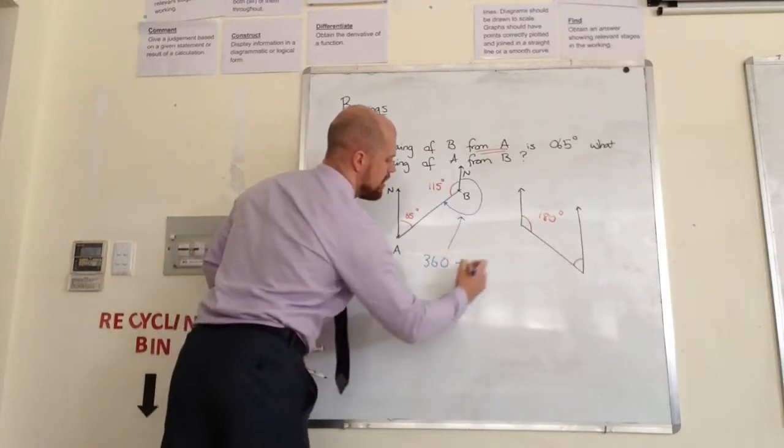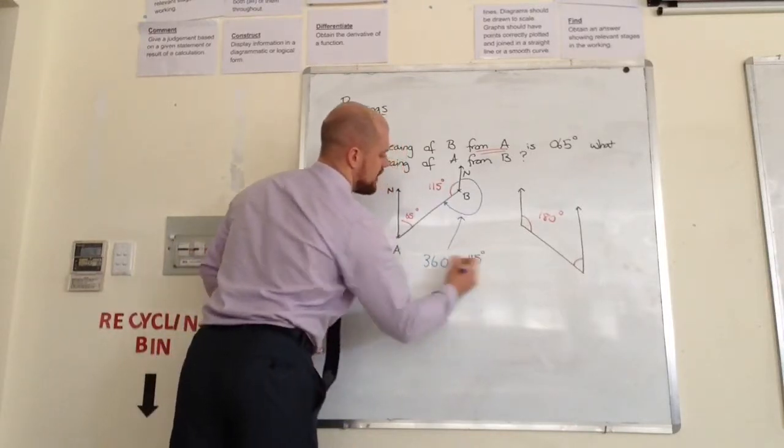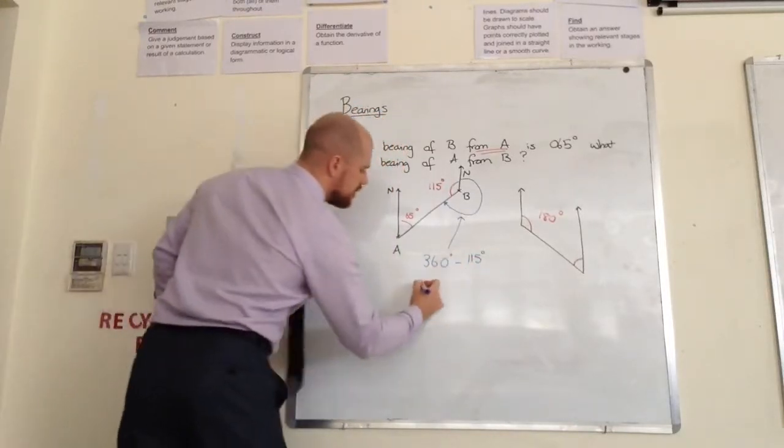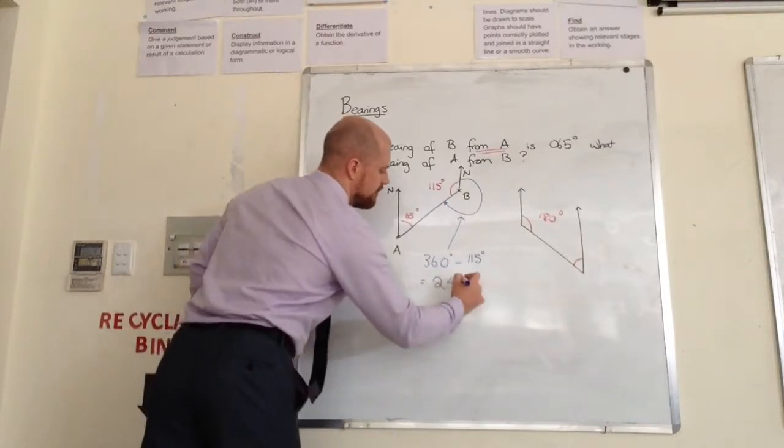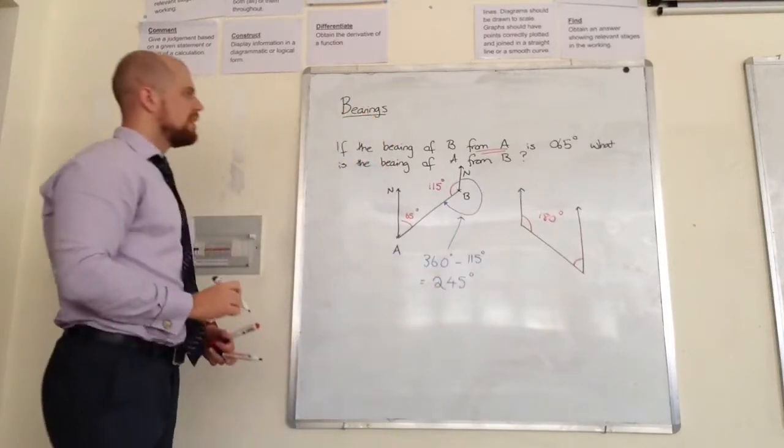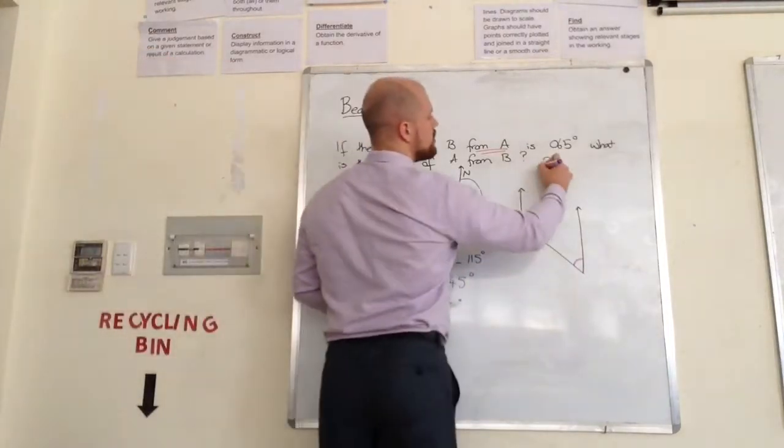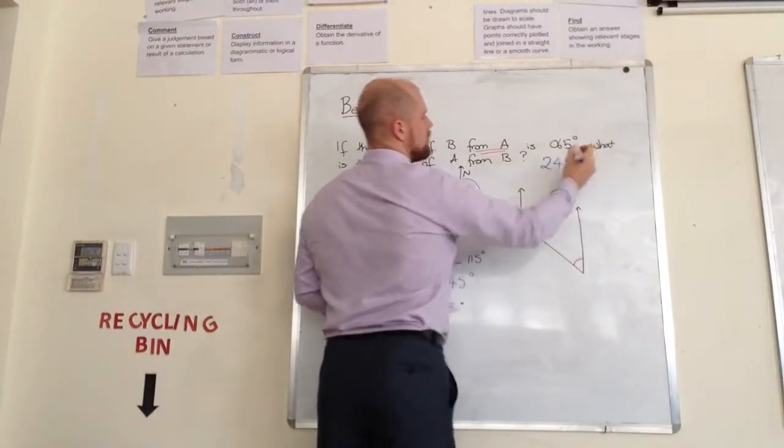So 360 minus 115, which would be 245 degrees. That's the easiest way to do it. 245 degrees.